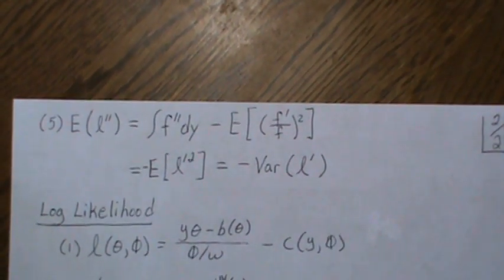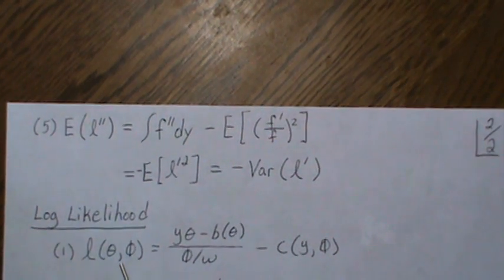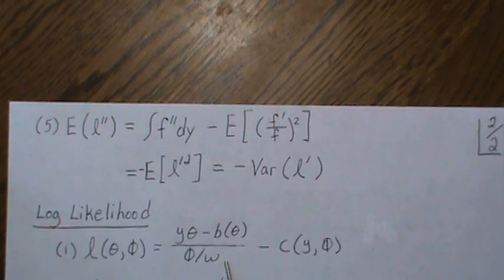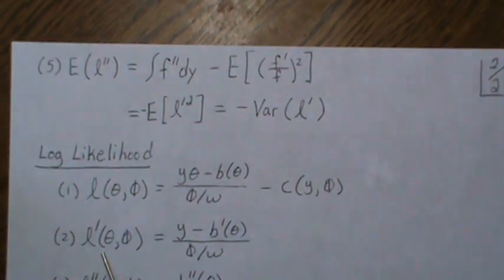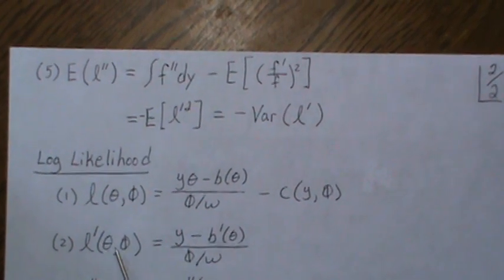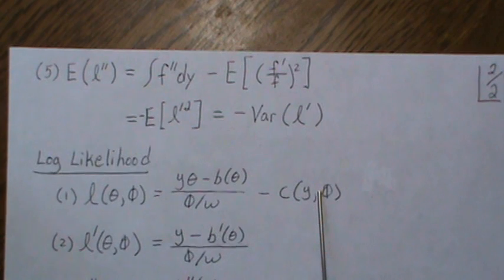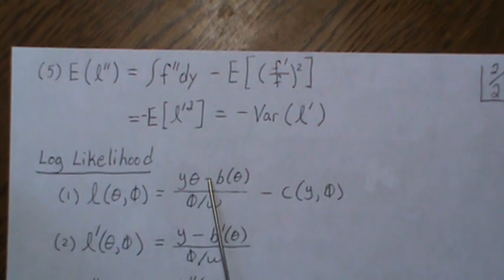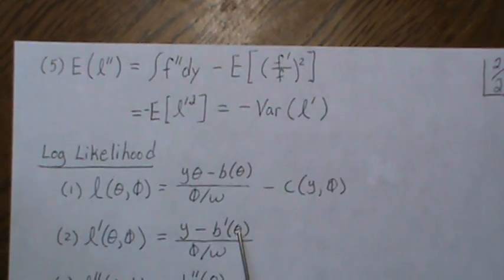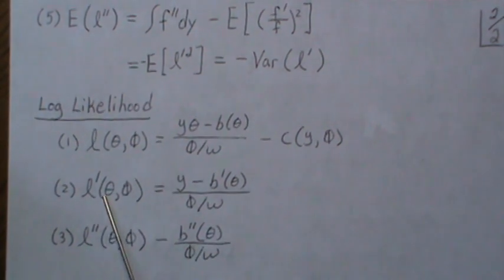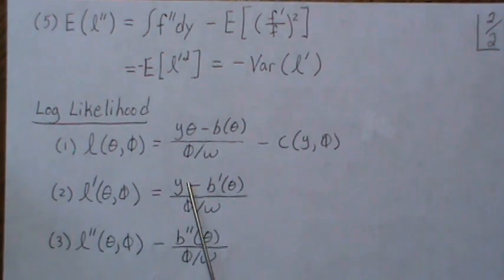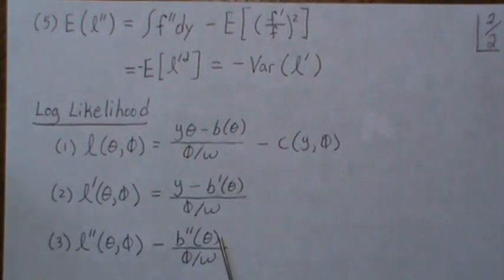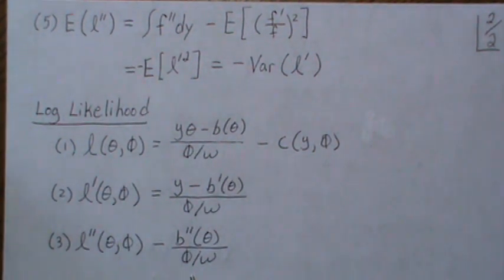Now let's look at the log-likelihood explicitly. Taking the log of our density, the exponential drops out and everything remains. Taking the first derivative with respect to theta: the C term has no theta so it's constant and drops out, giving us (y minus B'(theta)) divided by phi/w. The second derivative is simply −B''(theta) divided by phi/w.